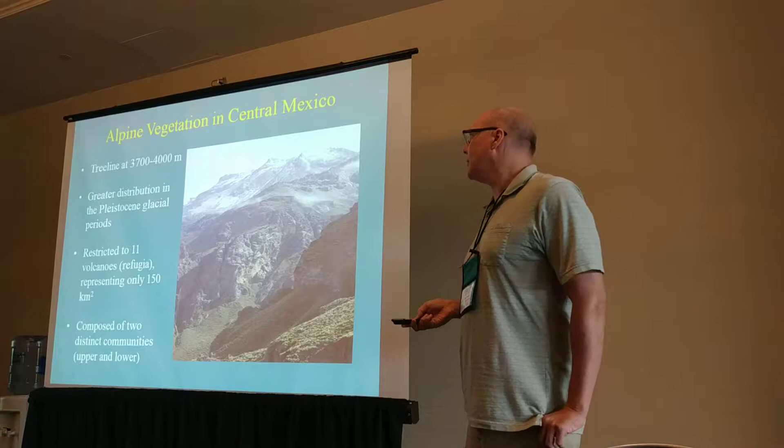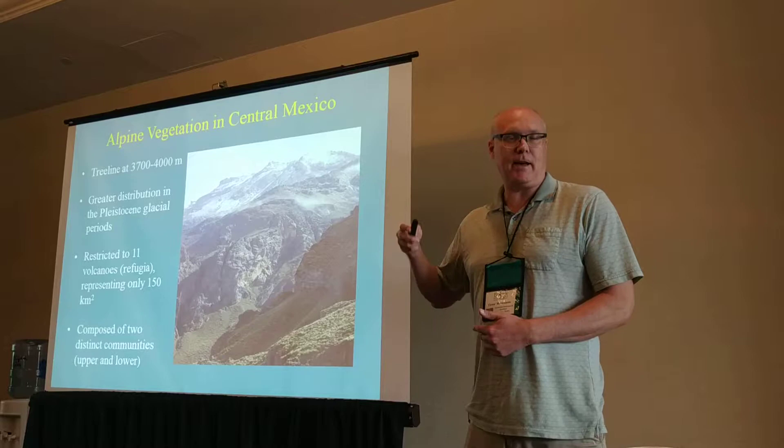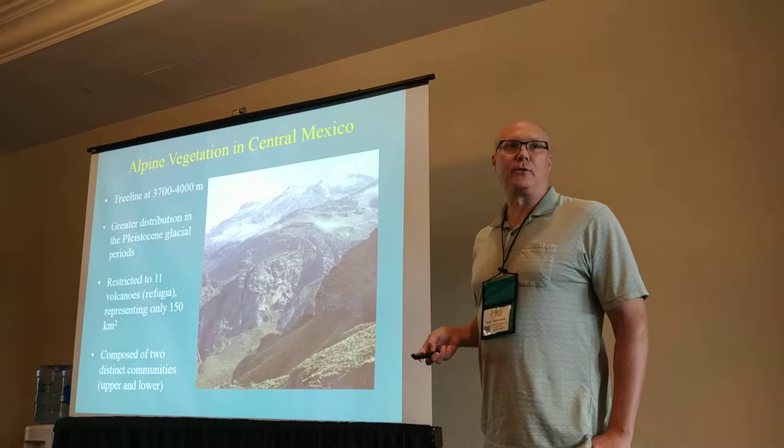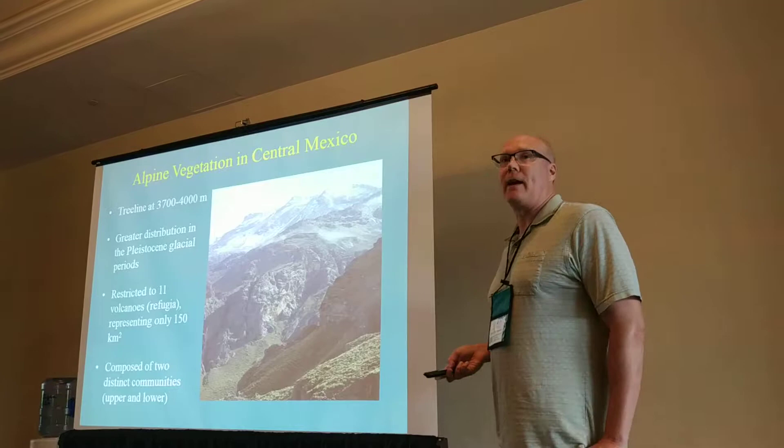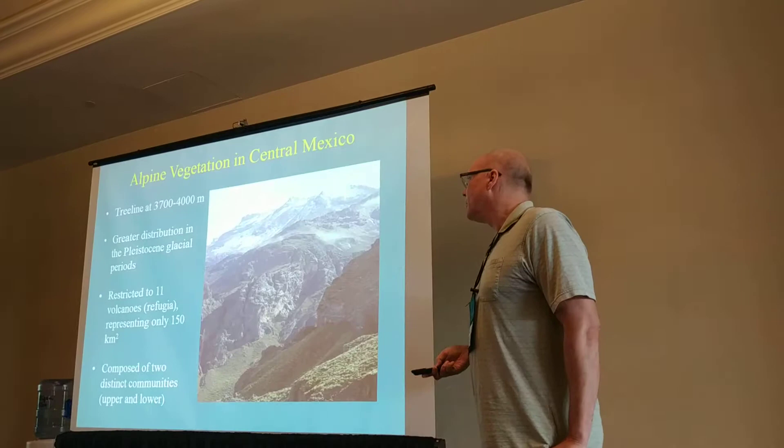In central Mexico, the tree line occurs at about 3,700 to 4,000 meters. Tree lines are usually associated with latitude — as you get closer to the equator it gets higher, and as you get closer to the poles it gets lower — so it's generally around 3,900 meters. Alpine vegetation had a much greater distribution in the Pleistocene, but right now it's restricted to only 11 of the highest peaks in central Mexico.